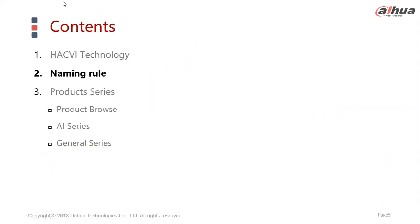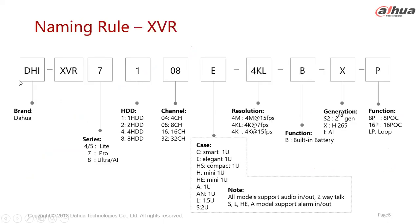We're going to cover the naming rule for HDCVI products the same way we did for IP products — so the naming rule for analog products. The naming rule is quite easy for recorders. The common model we sell at the moment is the XVR, which supports both IP cameras and analog cameras.